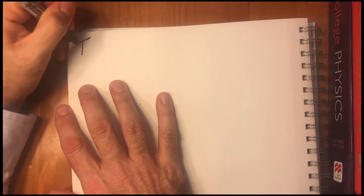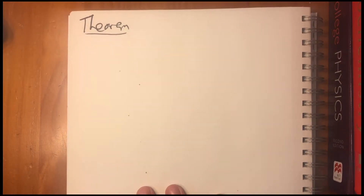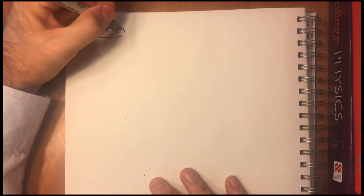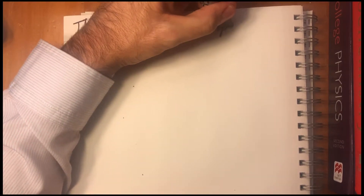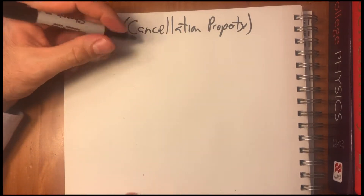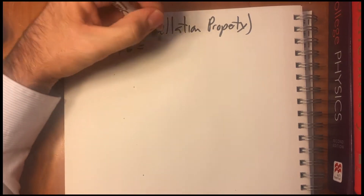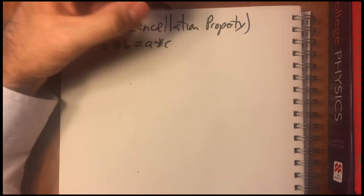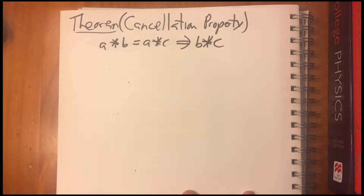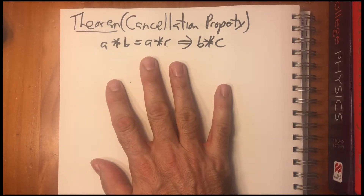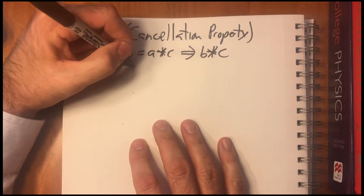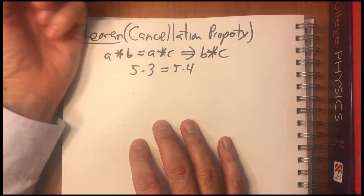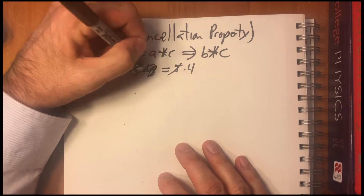The third property is the cancellation property. What's interesting here is that all of this just instantly springs from the four little properties that we started with that define a group. The cancellation property says that A star B equals A star C implies that B equals C. This is a property we use in algebra all the time. For example, if we have five times X equals five times two, then X equals two.